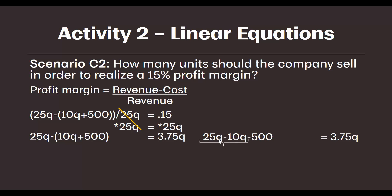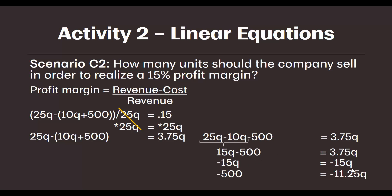Since the 25 and the 10 are associated with the same variable Q, we can combine these, and if we subtract 10 from 25Q, we get 15Q minus 500 equals 3.75Q. The algebra here is very similar to what we did when we were calculating break even. The next thing is to subtract 15Q from both sides of the formula, and I get negative 11.25Q and negative 500. I'm going to then divide both sides by negative 11.25. Dividing the right side by negative 11.25 gives me just Q, canceling out the negative 11.25, and dividing negative 500 by negative 11.25 gives me 44.44, or 45 units.